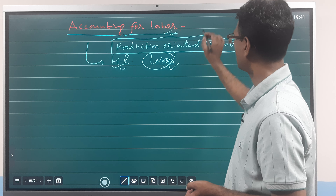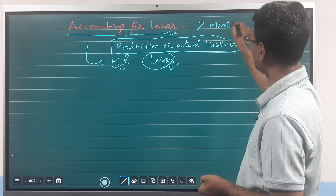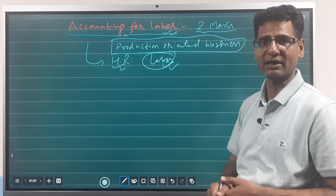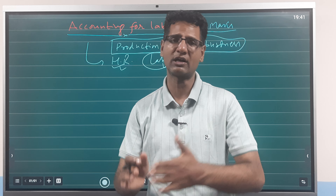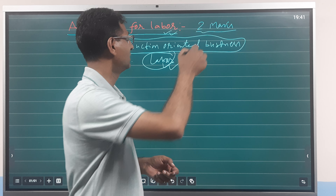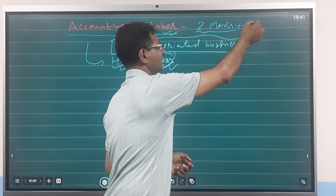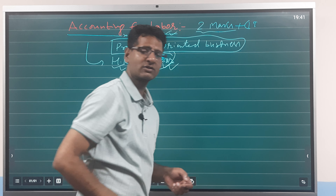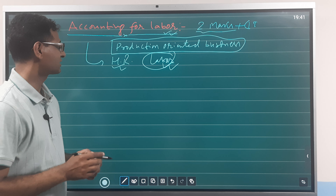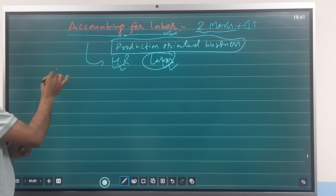In terms of exam structure: 2 marks for the numerical part, basically 2 numerical questions worth 1 mark each, and a theoretical part worth 3 marks.